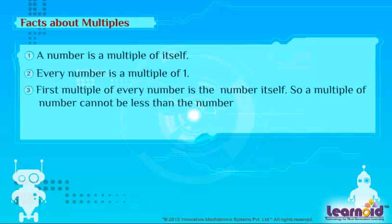First multiple of every number is the number itself. So, a multiple of a number cannot be less than the number. Multiples of any number are infinite.